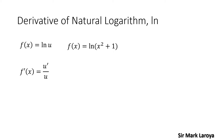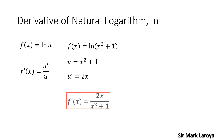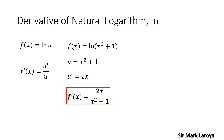For example, let's say we have f(x) = ln(x² + 1). Our u is the quantity x squared plus 1. So getting its derivative, our u prime will be equal to 2x. Applying the formula f'(x) = u prime over u, that will be 2x all over (x² + 1), so f'(x) = 2x over (x² + 1).